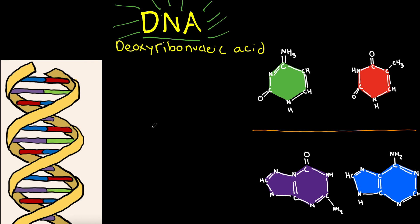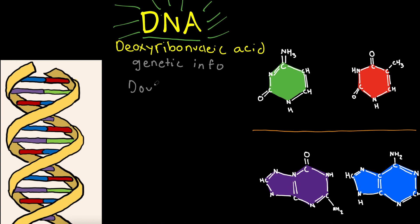We're first going to talk about nucleic acids. We have two different nucleic acids: DNA and RNA. DNA, also known as deoxyribonucleic acid, is a spiral structure — you can see it here with those ladder-like rungs, which we'll talk about later. The main function of DNA is that it carries genetic information. It's also the blueprint of life. DNA is much more different from RNA in that it has a double helix, as you can see in the picture to my left.